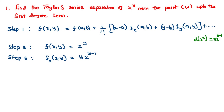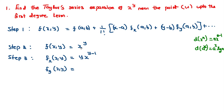So fx is equal to y into x to the power y minus 1. Next, we want fy(x,y) — differentiation of f with respect to y treating x as constant. Here we use the formula: differentiation of a to the power x is equal to a to the power x into log a. Here our a is x and the variable is y, so fy is equal to x to the power y into log x.